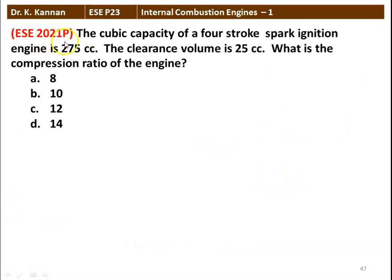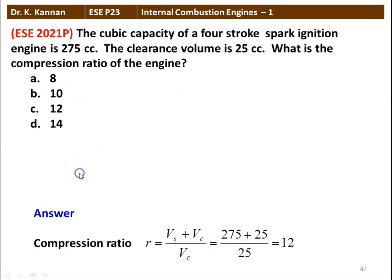The next question from the 2021 question paper: the cubic capacity of a 4-stroke spark ignition engine is 275 cc and the clearance volume is 25 cc. What is the compression ratio of the engine? Options are 8, 10, 12, and 14. Compression ratio R equal to Vs plus Vc divided by Vc: 275 plus 25 divided by 25 equal to 12. So the answer is 12, which is the compression ratio of the given engine.